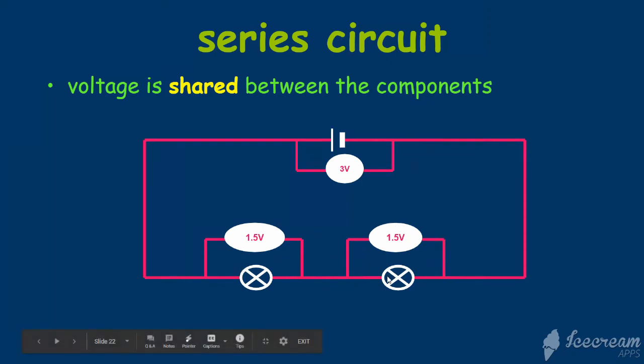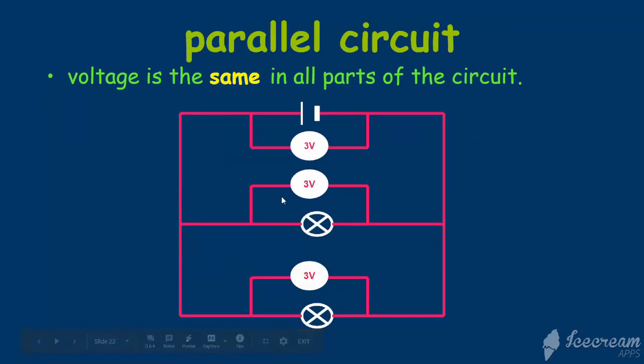If the 2 lamps are equal, then it's 1.5 volts for one lamp and 1.5 volts for the other lamp. What happens if we connect the same lamps but now in parallel?